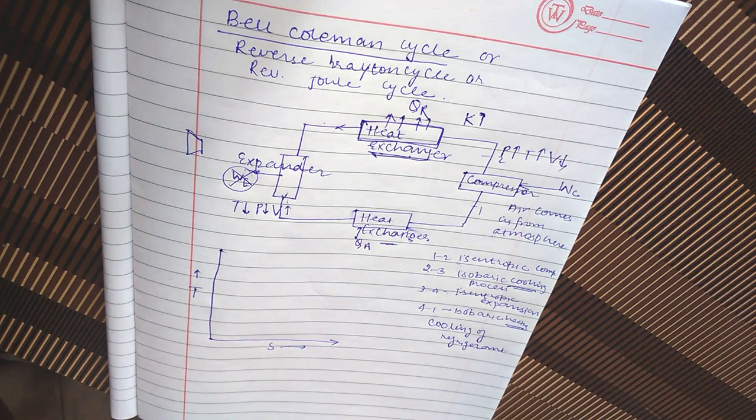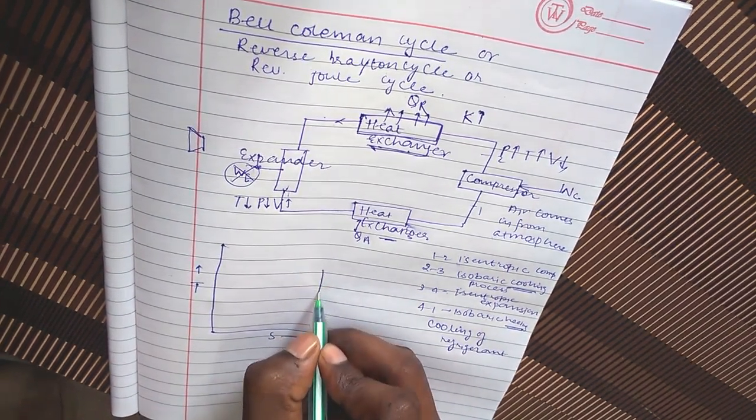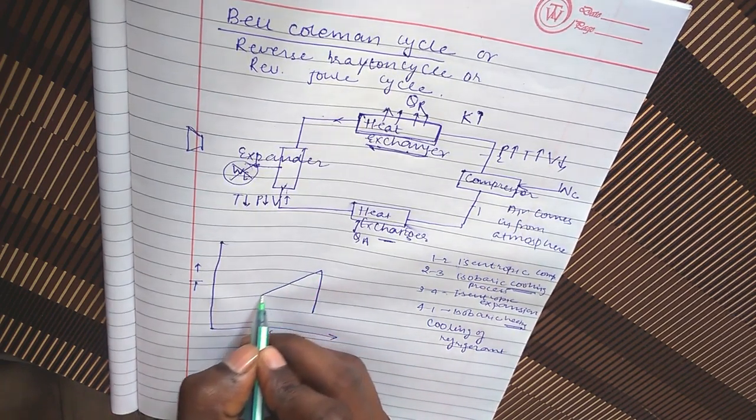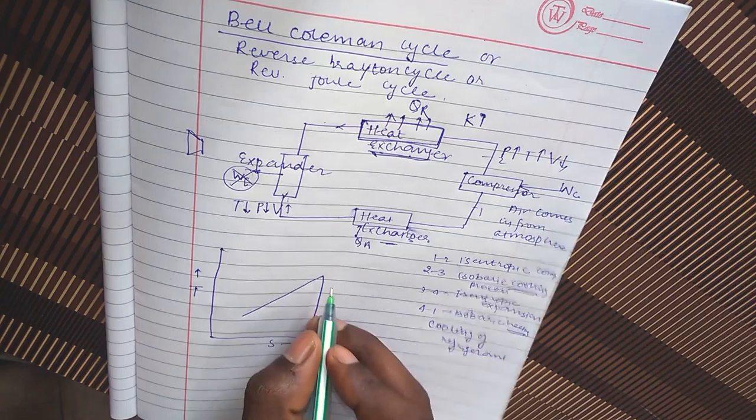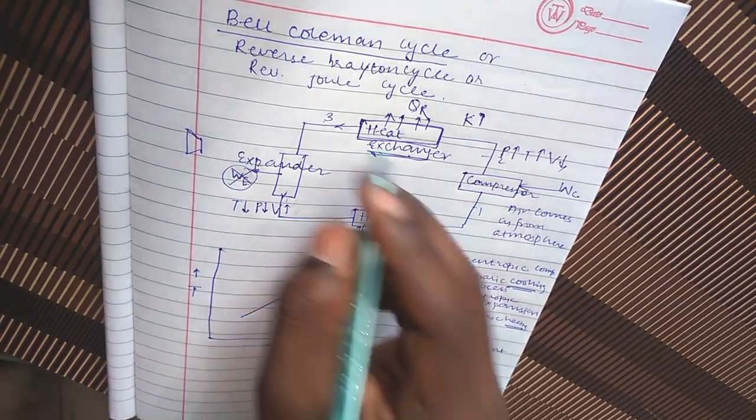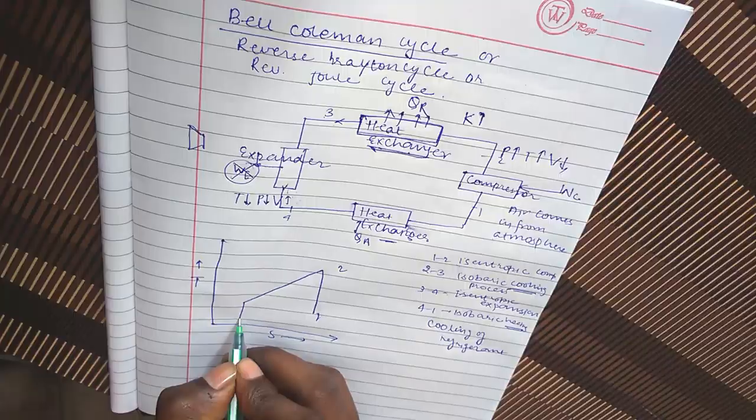Now let's draw a T-S diagram. We know process one to two is isentropic, so it would be like this. The pressure curve is like this. Now again one to two, two to three is isobaric. Now three to four is isentropic again.